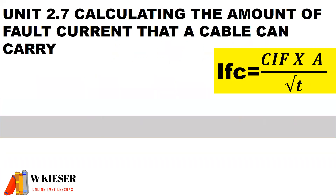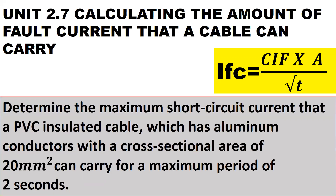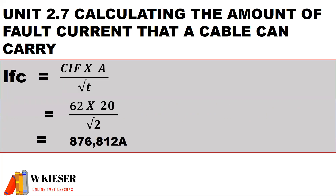Calculating the amount of fault current that a cable can carry. The formula: I_FC is the fault current, A is the cross-sectional area in mm², CIF is the conductor insulation factor, and T is the time in seconds. Determine the maximum short circuit current that a PVC insulated cable with aluminum conductors and a cross-sectional area of 20 mm² can carry for a maximum period of 2 seconds. The conductor insulation factor is 62, the cross-sectional area is 20 mm², and the time is √2 seconds. Therefore, the fault current is 876,812 amps.